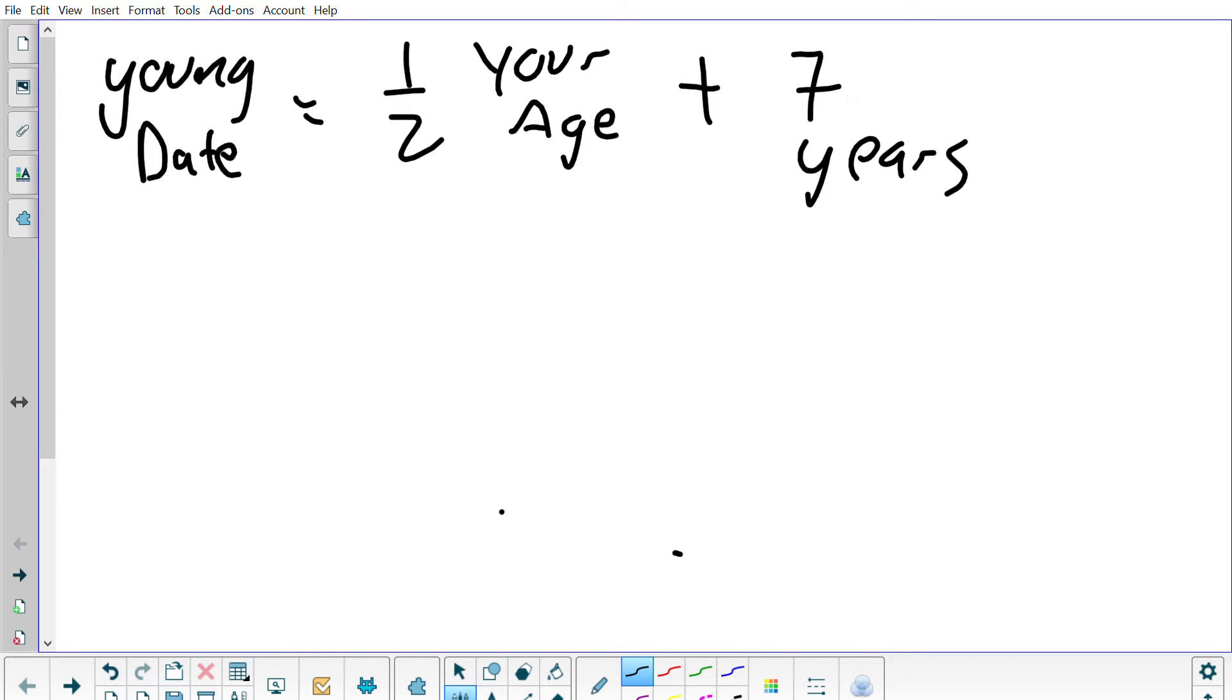For example, if you were 40 years old, the youngest that you could date is someone 27.